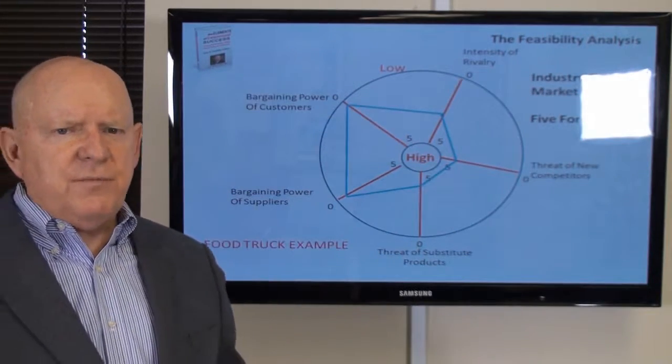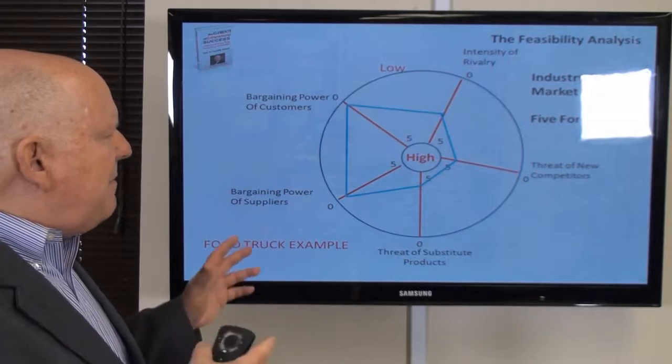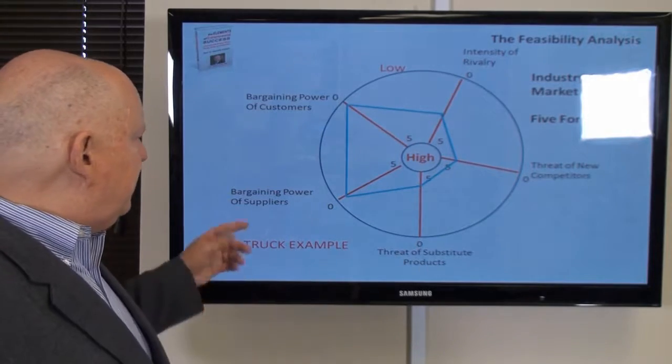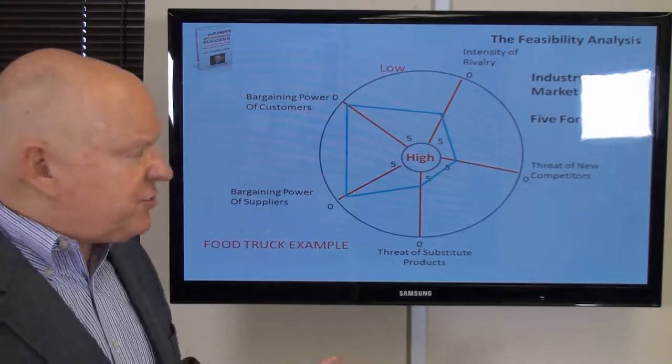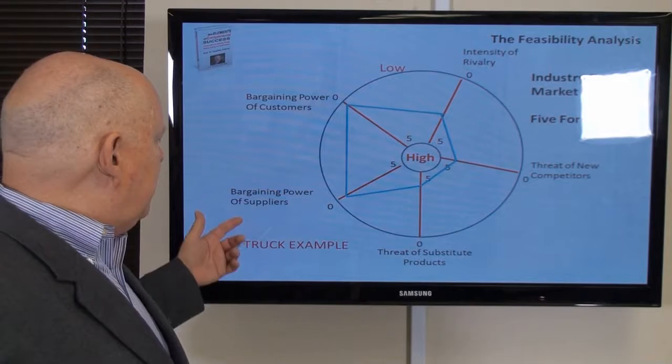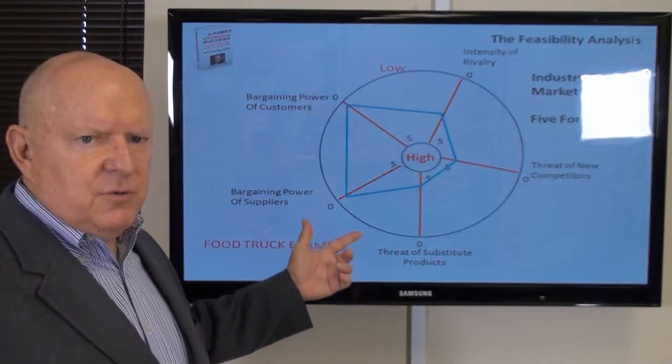Then for different businesses, you just map it out. For example, in the food truck industry, the bargaining power of suppliers is low.